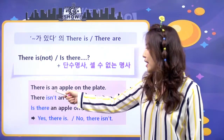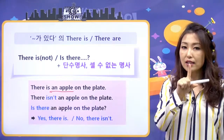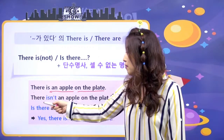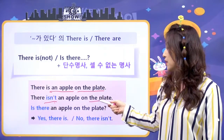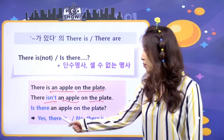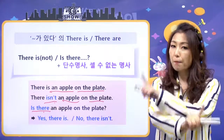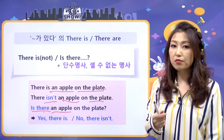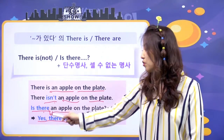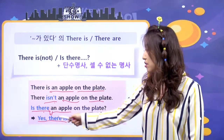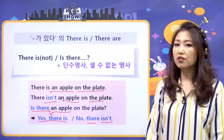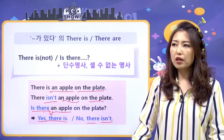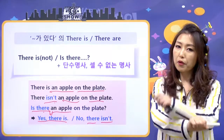예문을 보면 'There is an apple on the plate', 그 접시 위에 사과 하나가 있어 이런 얘기예요. 부정문은 'There isn't an apple on the plate.' 의문문으로 바꾸면 'Is there an apple on the plate?' 사과 하나가 그 접시 위에 있어? 이렇게 물어보는 거예요. 답은 'Yes, there is.' there로 물어봤으니까 there로, is로 물어봤으니 is로 답하면 돼요. No이면 'No, there isn't.'가 되는 거예요. 비동사는 굉장히 심플해요.